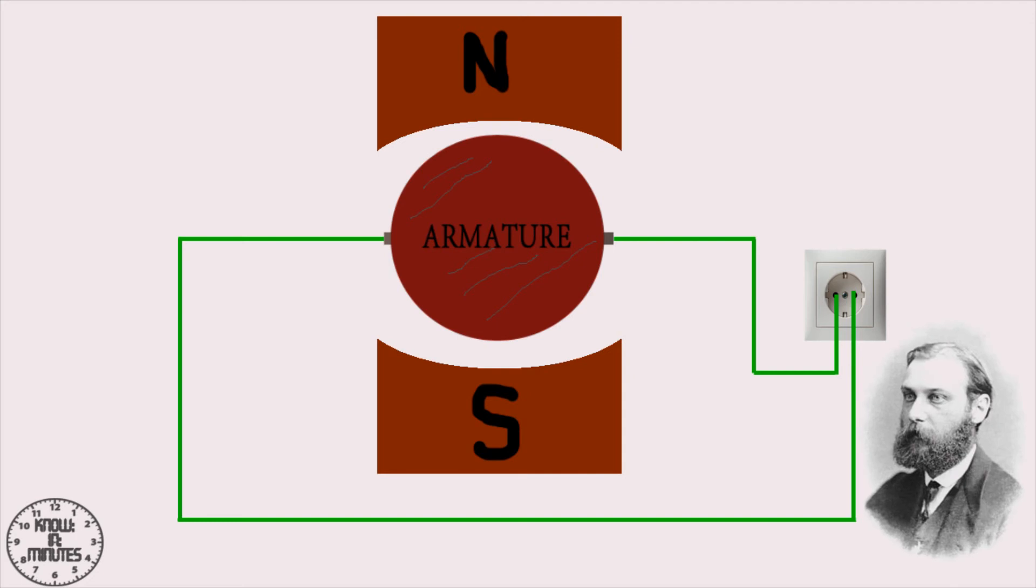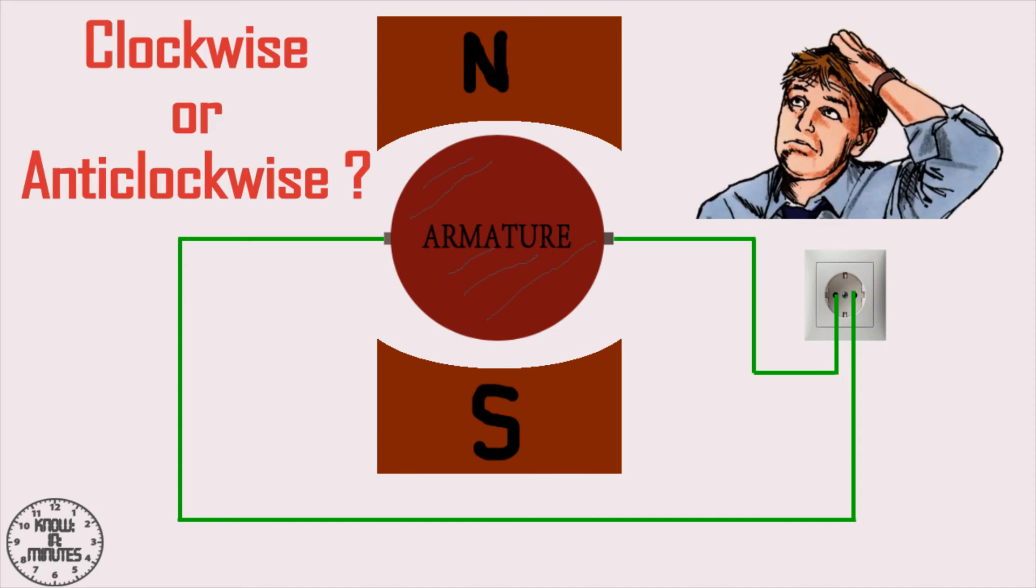After watching the animation, if you are Mr. Fleming, you will come to notice one thing. This is the very basic question raised in the mind of Mr. Fleming. By connecting the machine with the socket, one can definitely tell that the machine will function as a motor. But how does one know whether the armature will rotate in a clockwise or anticlockwise direction?